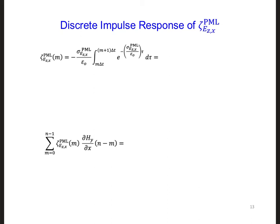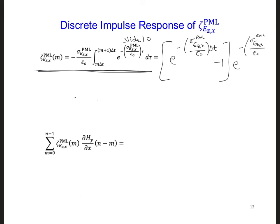Plugging in the expression that we had earlier for zeta with respect to continuous time, that was on slide 10, we get this expression that's written on the top part of the screen. If we were to evaluate this, we would get e to the minus sigma ez x PML over epsilon naught times delta t minus one, and then e to the minus sigma ez x PML over epsilon naught times m delta t.